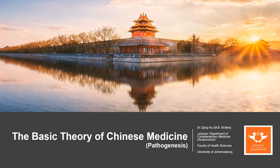In the previous two videos, we discussed the excess and deficiency patterns and the impairments of yin and yang. These two categories describe the disease from different aspects. First, excess and deficiency — we talk about the disease from the struggle between the antipathogenic qi and the pathogenic qi, like the fighting between your army and the enemy.